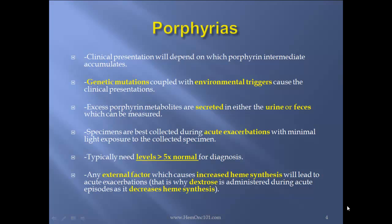Specimens are best collected during acute exacerbations with minimal light exposure to the collected specimen. Typically, the level needs to be five times normal for the diagnosis. Any external factor which causes increased heme synthesis will lead to acute exacerbations. That is why dextrose is administered during acute episodes, as it decreases heme synthesis.